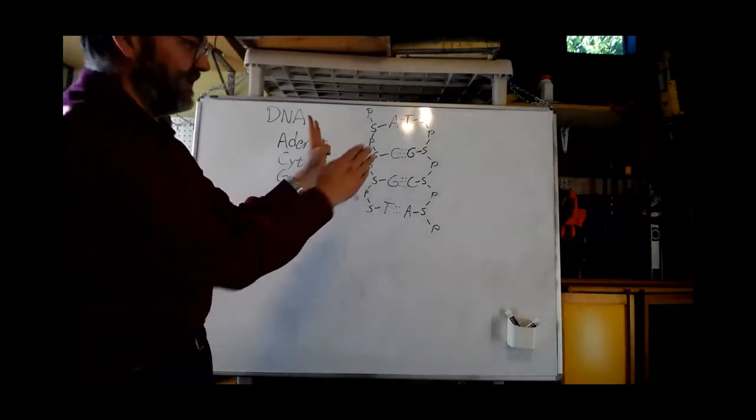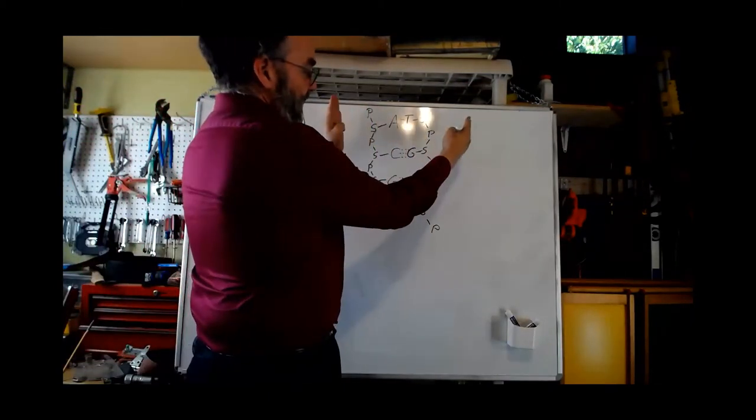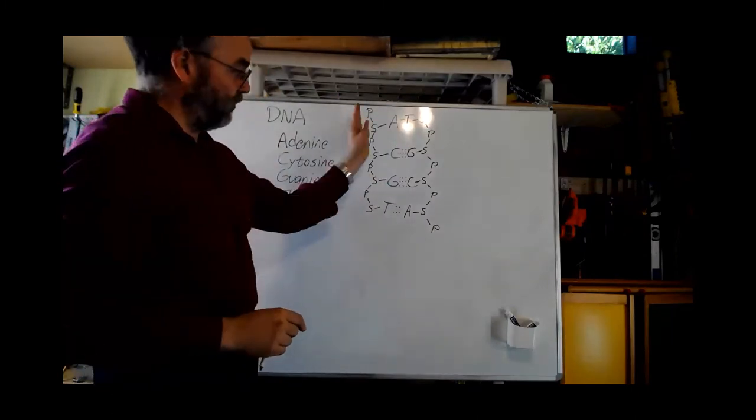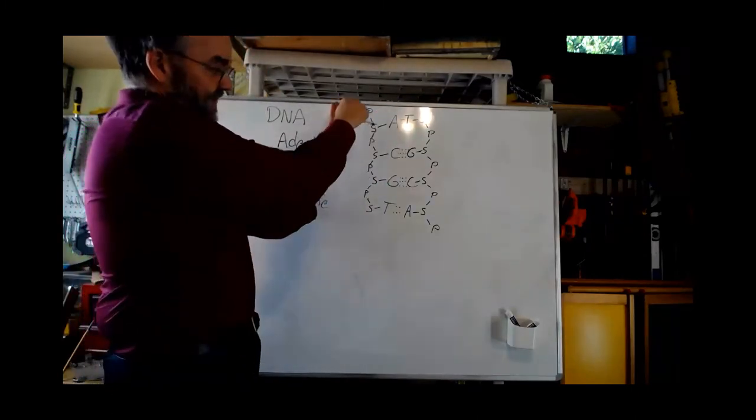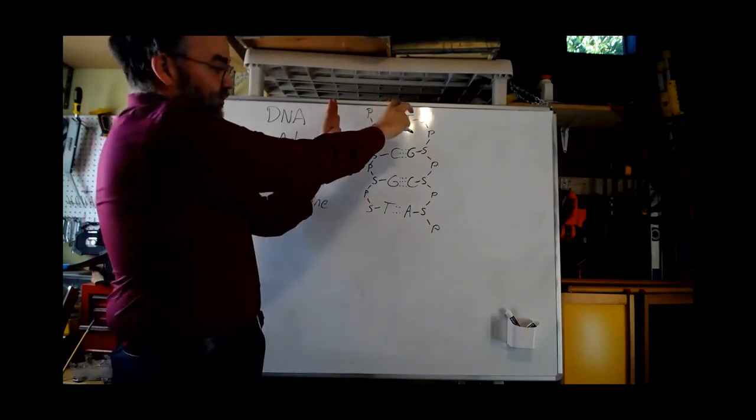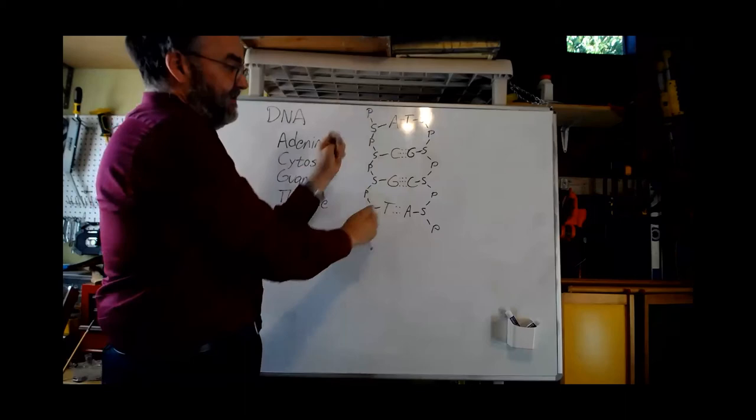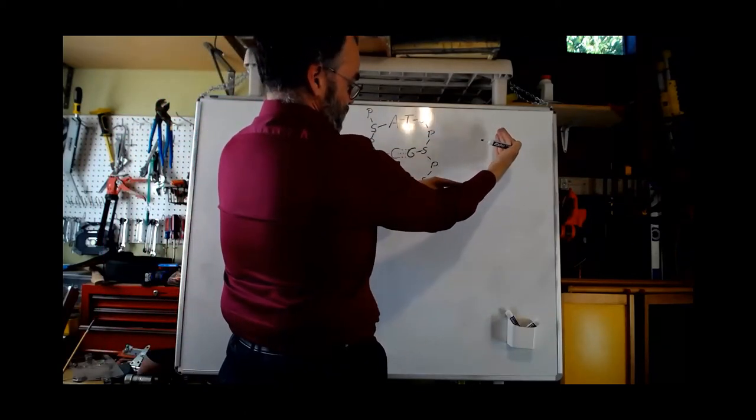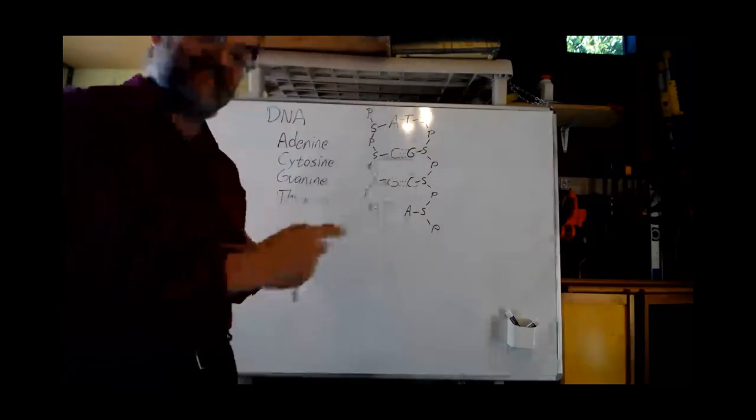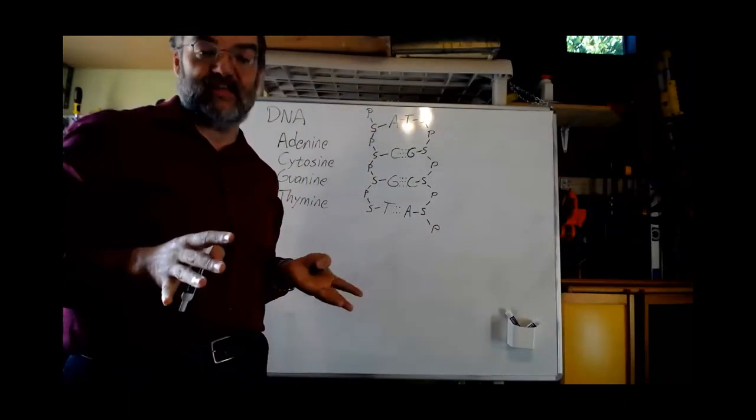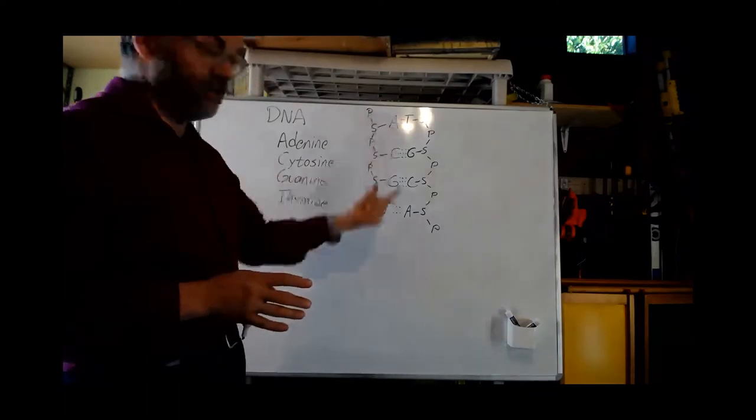That's special because if I took these apart, I could assemble a copy on each one. If I pulled this strand over here that said A, C, G, T, since I know that T goes with A, I could build T, G, C, A. And when I took this one apart, I could build A, C, G, T, and then I would have two identical pieces of DNA. That base pairing allows us to make copies of this molecule, even if it's very, very, very long.